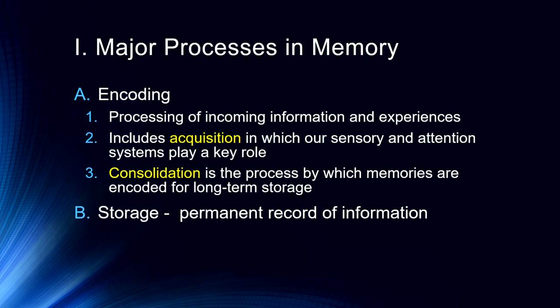That brings us to storage, the next important process. This is how our permanent record of information is kept — how things are stored. We're starting to unpack a little bit about how this works. We know there are biological processes for essentially forgetting — going through and clearing out things we don't need to remember anymore, or shifting their storage. All of this seems to be an important biological process that we're starting to learn more about.